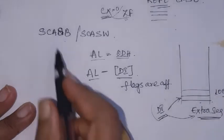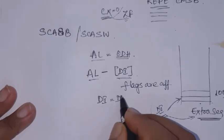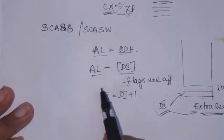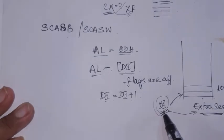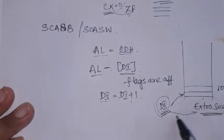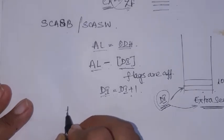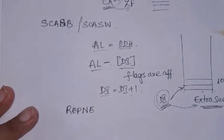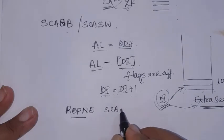What is done is: AL minus the byte pointed by DI — these two are compared and all flags are affected, but we are interested in the zero flag. After this comparison, DI is incremented by 1 automatically. AL contents are compared with the byte present in memory pointed by DI, and DI is incremented by 1 to point to the next memory location. If these two are equal, we come out; so this is preceded with REPNE — Repeat If Not Equal — Scan String Byte, because if equal you should come out of the loop.